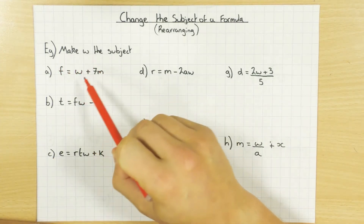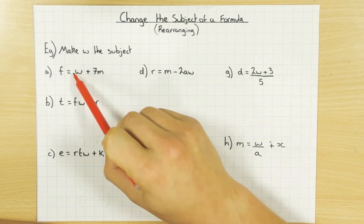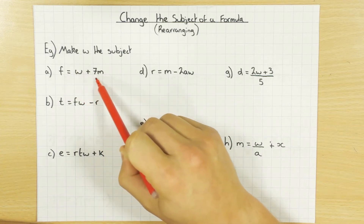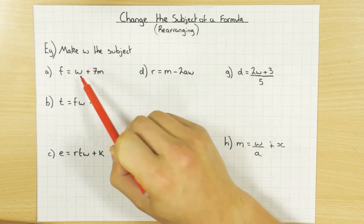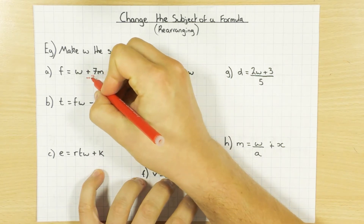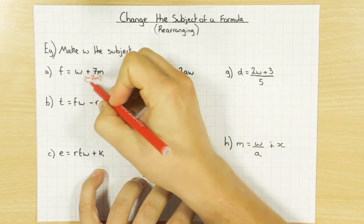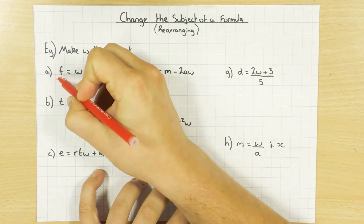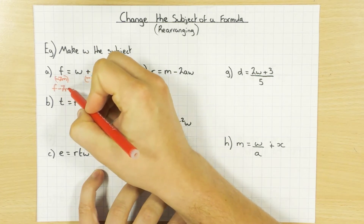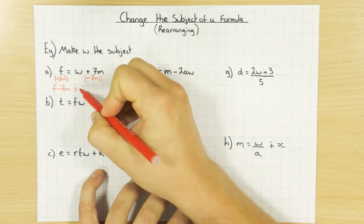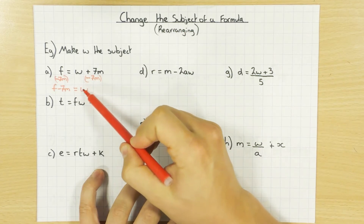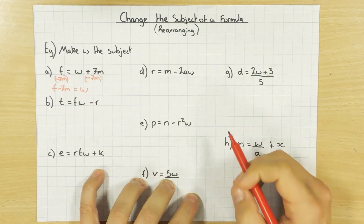With the first one, I want to make W the subject, so W here on its own. On this side of the equals I have this plus 7m, so I don't want that — I just want W. Using the balance method, I do the opposite and minus 7m. If I do it from this side I need to do it from this side as well, which gives me F minus 7m on this side of the equals and just W on that side. W is now the subject, so it's W equals F minus 7m.